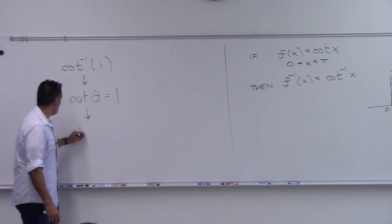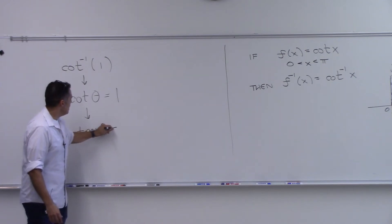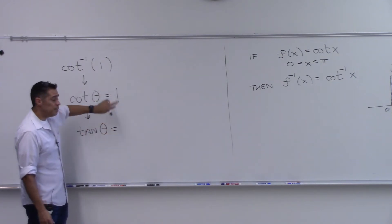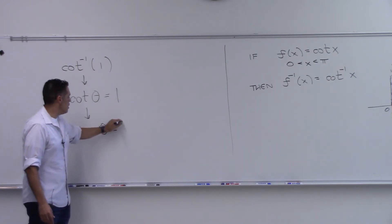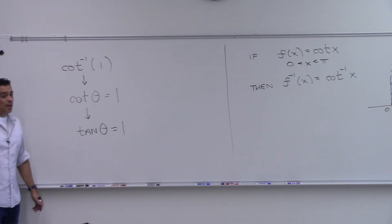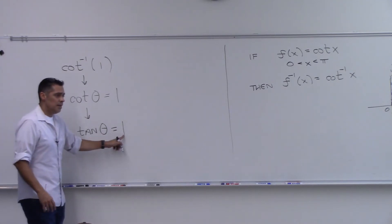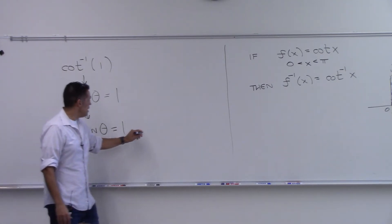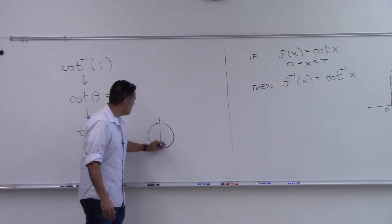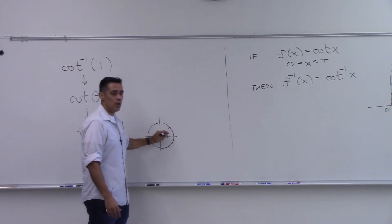This is also asking: when is tangent of some angle equal to 1 flipped over? 1 over 1 is 1. And where is tangent equal to 1? π/4. You have to be comfortable enough with this to recognize we're talking about π/4.